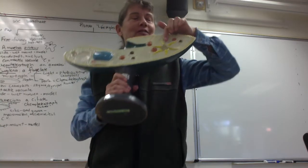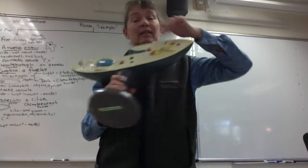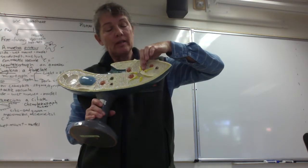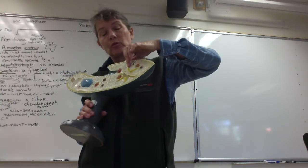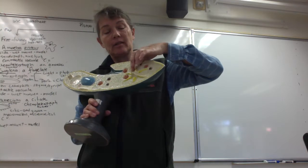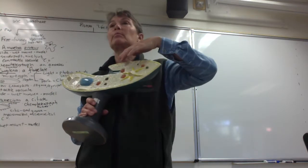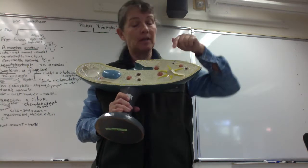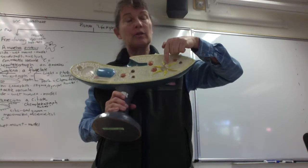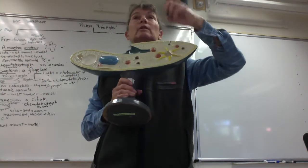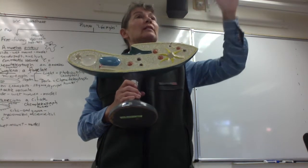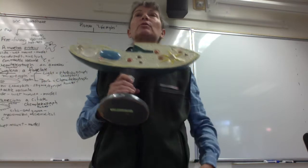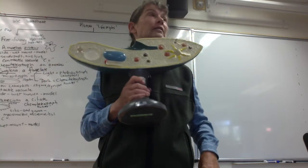Do you think the paramecium needs a contractile vacuole? Yes. This model shows us the radiating canals — the canals that extend into the cytoplasm to collect excess water, channel it to the contractile vacuole, which fills up like a water balloon and suddenly contracts, pumping water to the outside of the cell to prevent osmotic lysis.